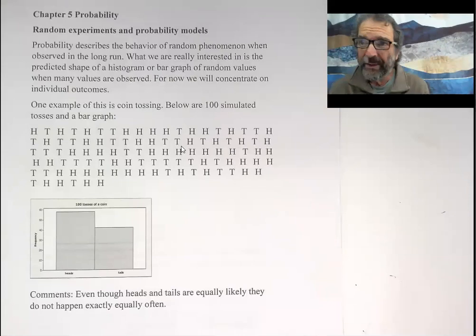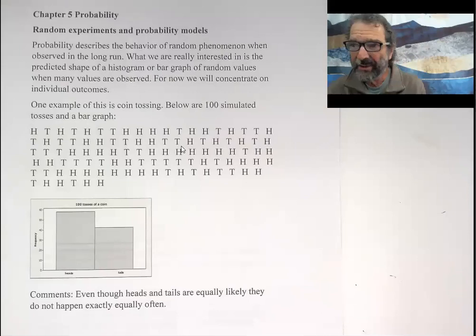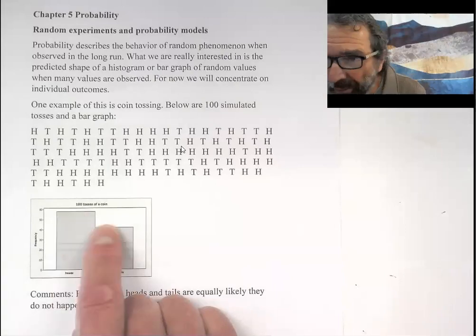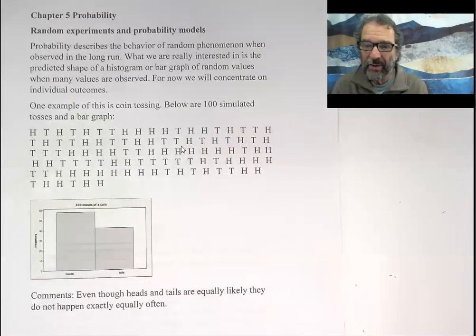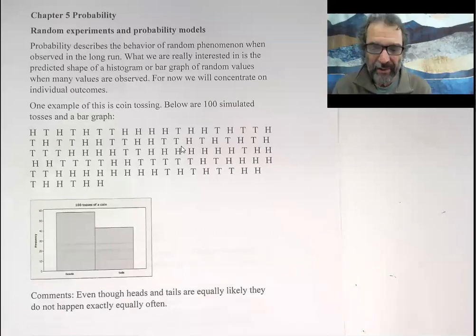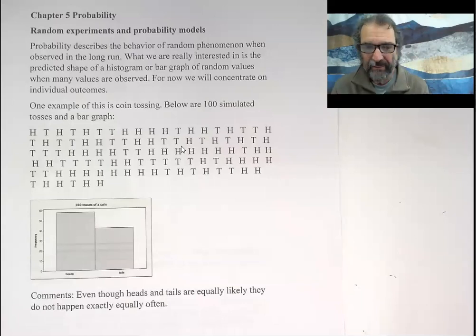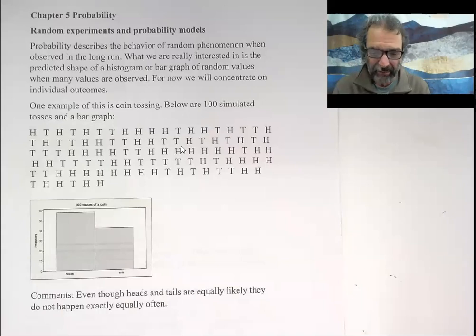100 tosses isn't enough for the fraction of heads to be close to 50% because these fractions here are out of 100, right? So that's 58% heads. That's sort of close to 50, but not that close, but that's only 100 tosses. So it takes a lot more than 100 repetitions of an experiment to analyze approximately what the actual probability, the long-term fraction of the time you see certain kinds of things happen, which would be a probability description.